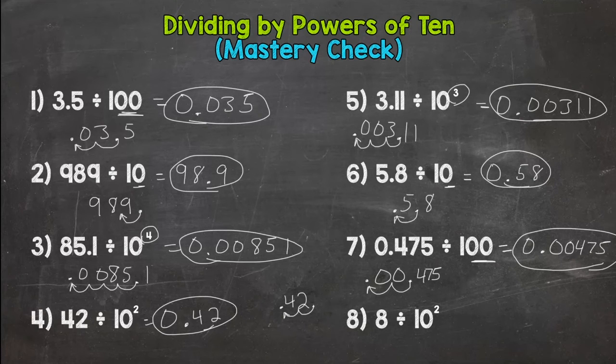And then let's wrap it up with number eight here. We have 8 divided by 100, or 8 divided by 10 squared, or 10 to the second power. So move it twice: one, two. Decimal, placeholder zero, zero, and the answer is 0.08 or eight hundredths.